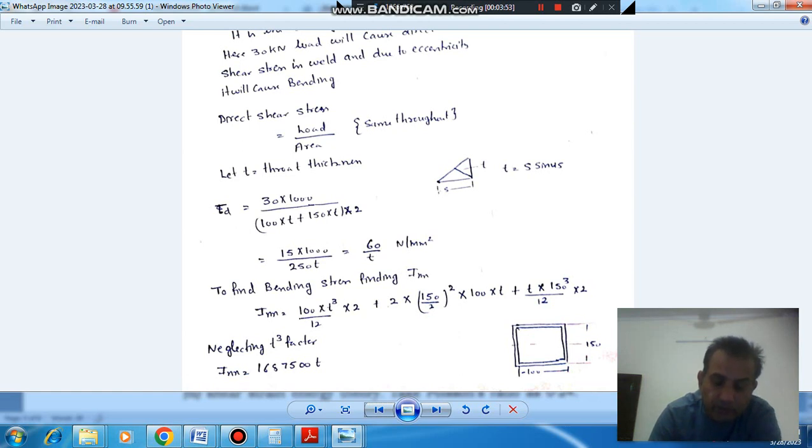So this is, according to parallel axis theorem, the moment of inertia about one axis can be transferred to another axis by using area of this. So area of this is 100 into T into 2. And the distance between its X axis, its own axis and the total figure X axis, their distance is 150. This is 2 into 150 by 2, T into 150. So 2 is for two sections. One section this, the other section this.